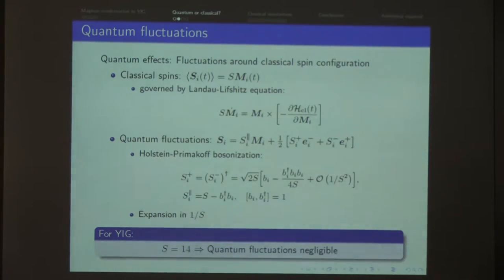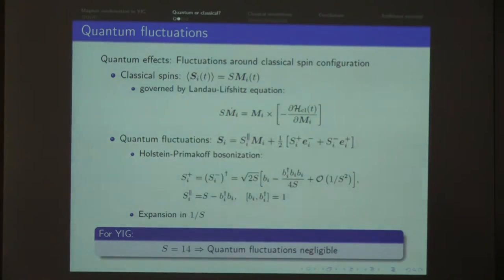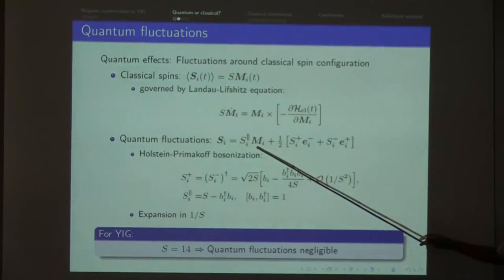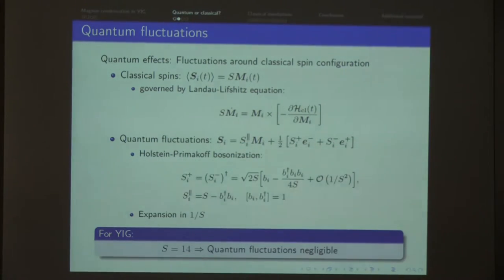Another argument: the effective spin is around 14, which is very large. You might just replace the spins by their expectation values — the magnetization — and describe the dynamics using the Landau-Lifshitz equation. If you worry about quantum fluctuations, you might try a Holstein-Primakoff transformation and expand in powers of 1/S, but S is very large, so even leading or next-to-leading terms are controlled by higher powers of 1/S, making quantum fluctuations certainly small effects. This is another argument why you might get away using an effective classical equation.